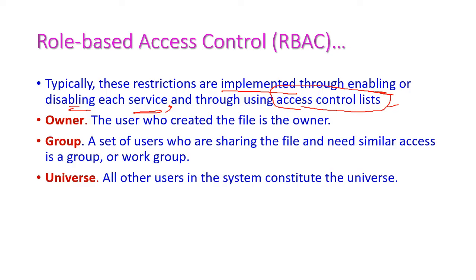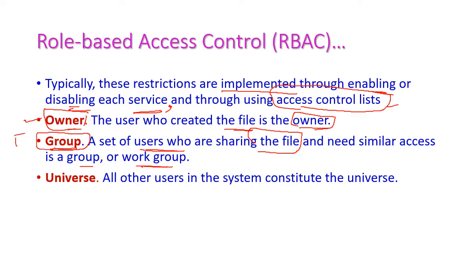There are three different types of people in an access control list. First is the owner — the person who created the file is the owner. Second is the group — a set of users who share the file and need similar access, such as people working on the same project who share common data. Third is the universe — all other users in the system constitute the universe, meaning all people involved in the project. Based on the role, the corresponding privilege is assigned to the particular user.